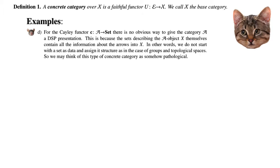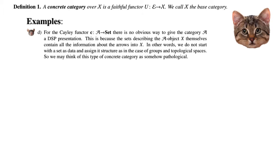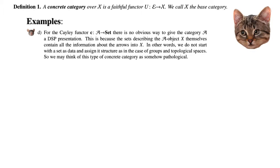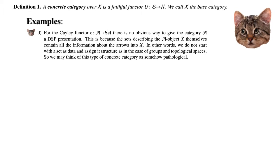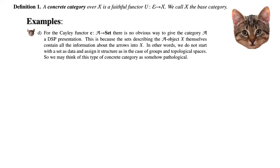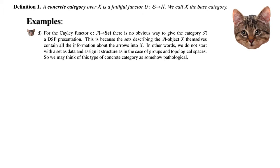For the Cayley functor, there is no obvious way to give a small category a DSP presentation. What we are doing is taking the categorical information of A and encoding it in Set — smallness ensures it is a set — but we are not starting with a set and giving it structure in the usual sense. So you might want to think of this concrete category as somehow pathological.